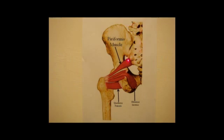In terms of anatomy, the piriformis muscle originates from the anterior aspect of the sacrum and inserts to the upper border of the greater trochanter of the femoral bone. The action of the piriformis muscle is abduction of the hip and lateral rotation of the thigh.